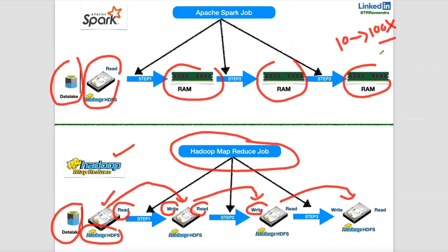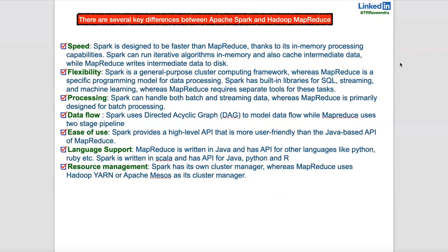There are plenty of reasons and benefits for using Spark, especially at the cloud level. When comparing Spark and Hadoop MapReduce, one key difference is speed — Spark processes in-memory while Hadoop MapReduce processes on disk. Spark is a general-purpose distributed in-memory parallel processing engine with multiple built-in libraries for SQL, streaming, machine learning, and graph data processing. It can handle both batch data and streaming or real-time data, whereas MapReduce is mainly designed for batch processing only.